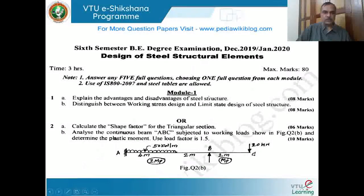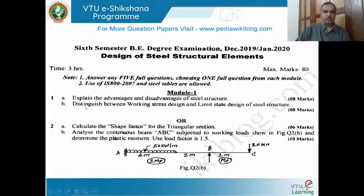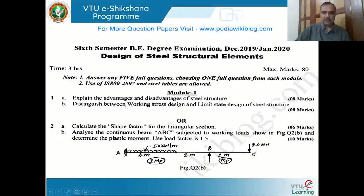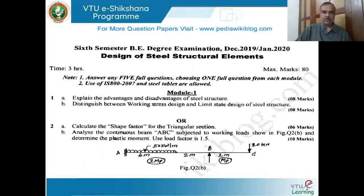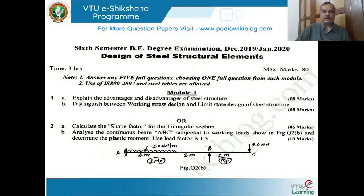The second question asks you to distinguish between working stress design and limit state design, covered in the first session in greater detail. The working stress method is also referred to as the allowable stress method, permissible stress method, or factor of safety method, where a certain factor of safety on the maximum yield strength of the material is used. For the limit state method of design, you can also get answers from IS 800.